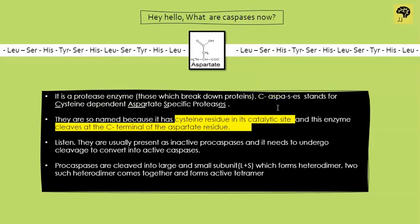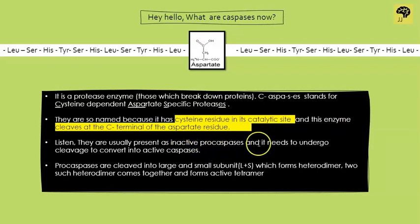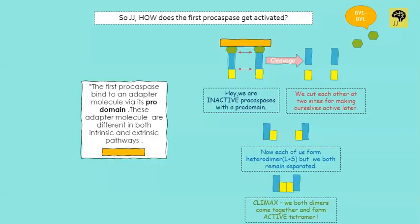Caspases are usually found inside our body in the form of inactive pro-caspases. The inactive form is known as pro-caspases, and they need to undergo cleavage to form active caspases. For example, we have pro-caspase 1 and pro-caspase 2.